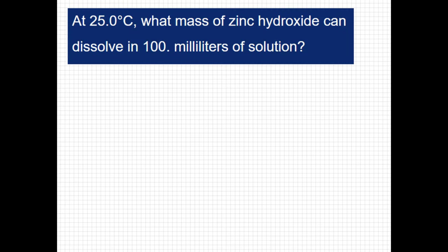Just like before, let's write our equation. I have zinc hydroxide, Zn(OH)2, which is a solid breaking apart into the zinc ion and two hydroxide ions. These are aqueous and this reaction is reversible. So our equilibrium expression is going to be Ksp equals the concentration of zinc times the concentration of hydroxide squared.